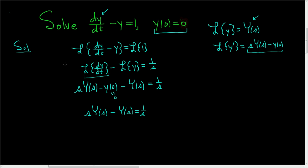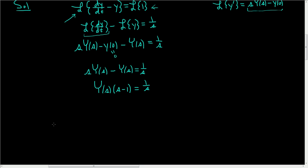So step one: take the Laplace transform of both sides, use linearity, apply the formulas, and use your initial conditions. Step two: solve for big Y of s. We factor out big Y of s to get (s minus 1) times big Y of s equals 1 over s. To finish, divide by s minus 1 — the same as multiplying by 1 over (s minus 1) — so Y of s equals 1 over s(s minus 1).